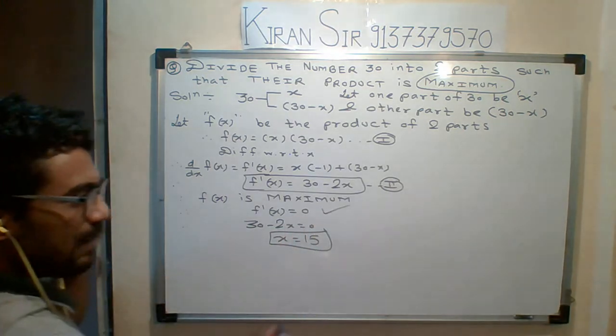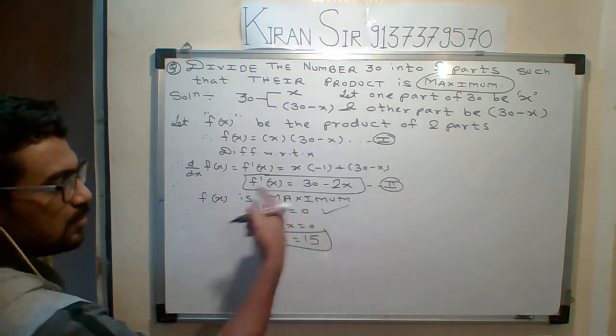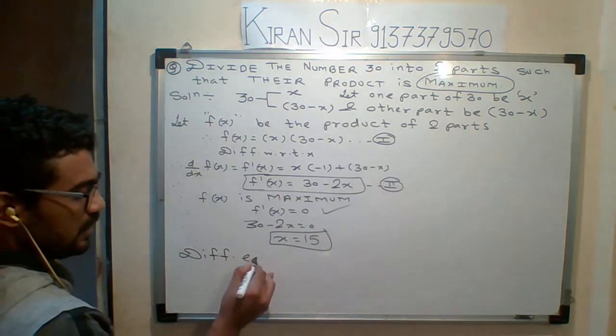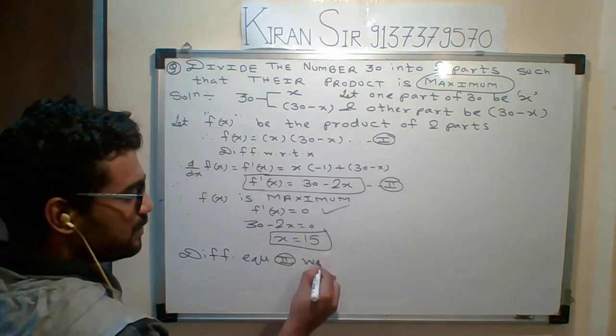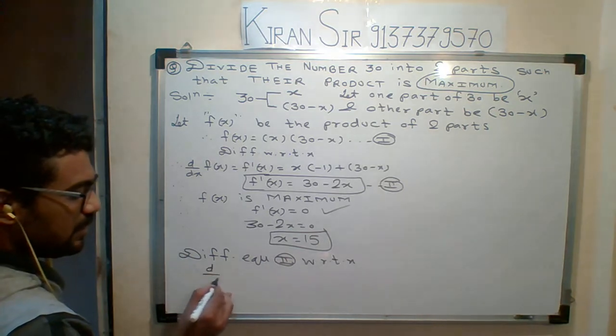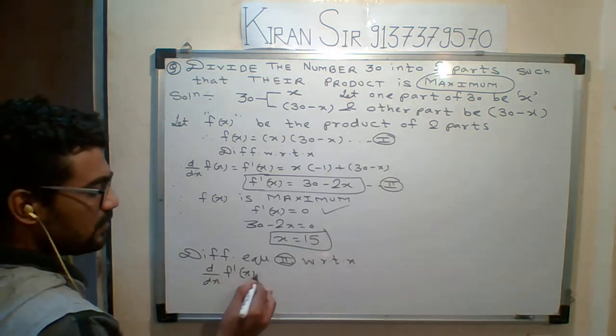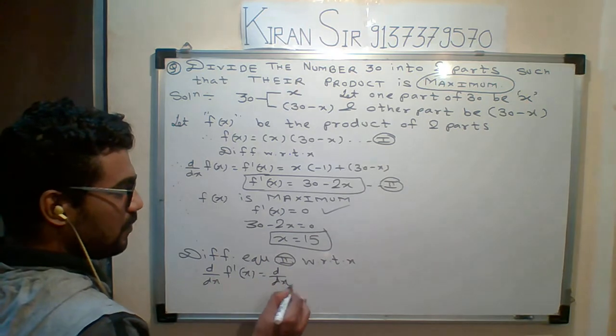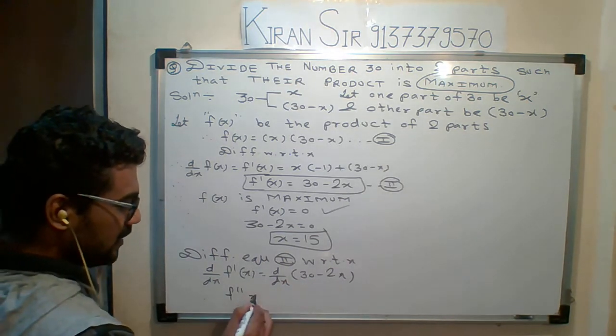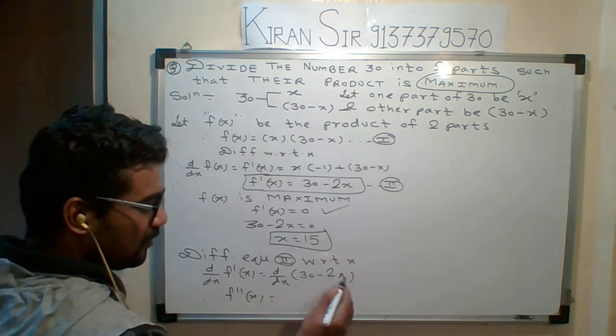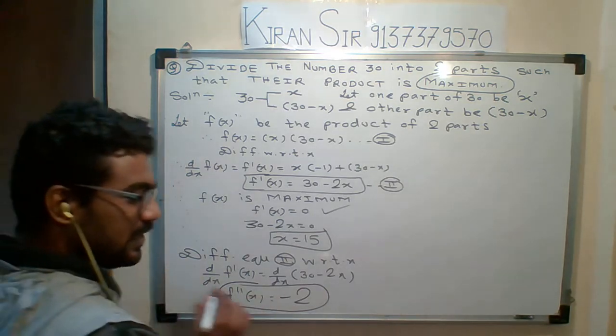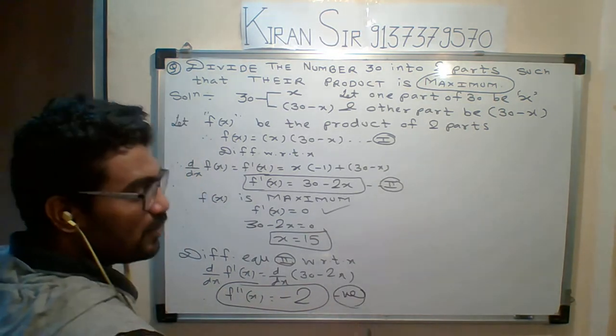So we will differentiate the second equation. Differentiate equation 2 with respect to x. If I differentiate that particular equation 2, which is already f'(x), again d/dx of 30 minus 2x, what is the double derivative we will get? Derivative of 30 is 0, derivative of minus 2x is minus 2. So students, here x value, put or not put, it connects to minus 2. Minus 2 means negative. Double derivative negative means given f(x) is maximum.